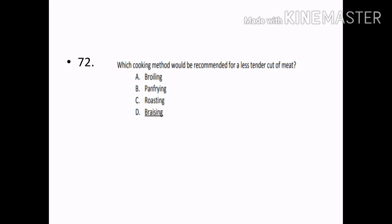Which cooking method would be recommended for a less tender cut of meat? Options — Boiling, Pan-frying, Roasting, Braising. Correct answer: Option D — Braising.